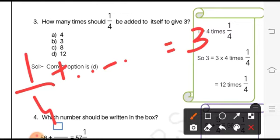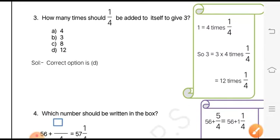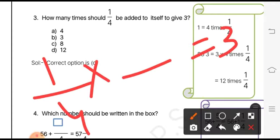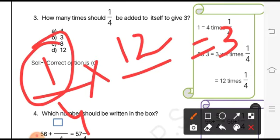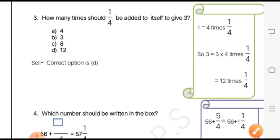In other words, we can say that 1 by 4 multiplied by what number gives us 3? What should be multiplied to 1 by 4 to get 3? If we observe the table of 4, we know that 12 divided by 4 will give us 3. So 3 times 4 is 12. It means the correct answer is option d, 12. 12 when multiplied to 1 by 4 will give us 3.